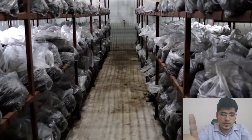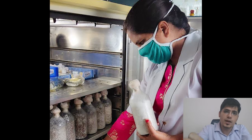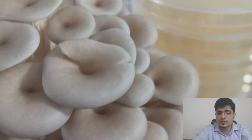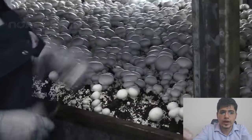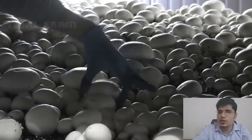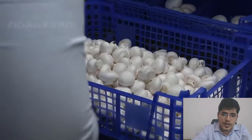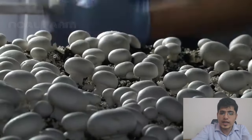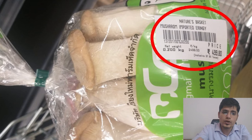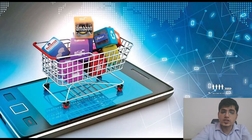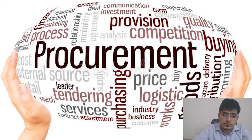In week one, we'll discuss the procurement of spawn, substrate, and the different miscellaneous items you will require on your farm. We want to save you from the hassle of finding different things in the initial setup, so we will describe what quality parameters you need to check during procurement, what the market prices of raw materials are, and locations where you can procure them from.